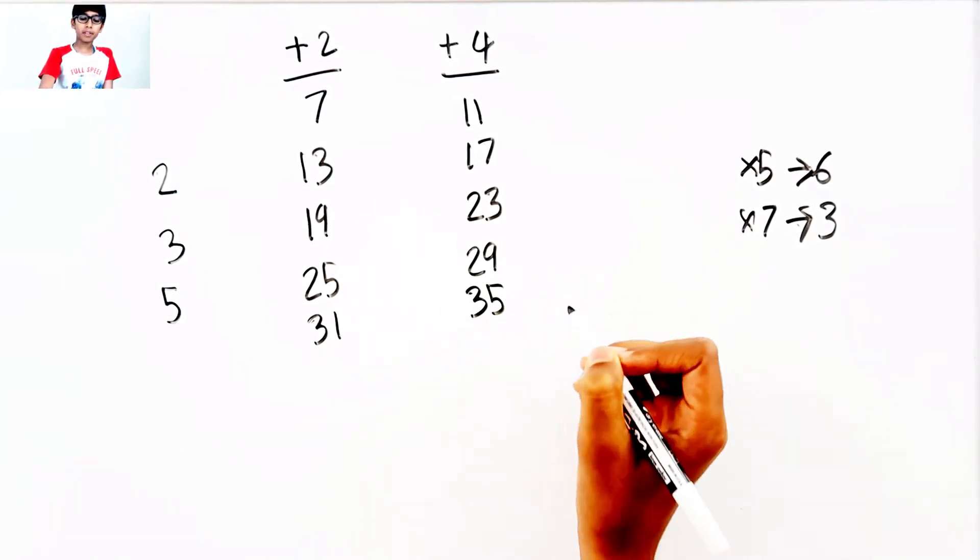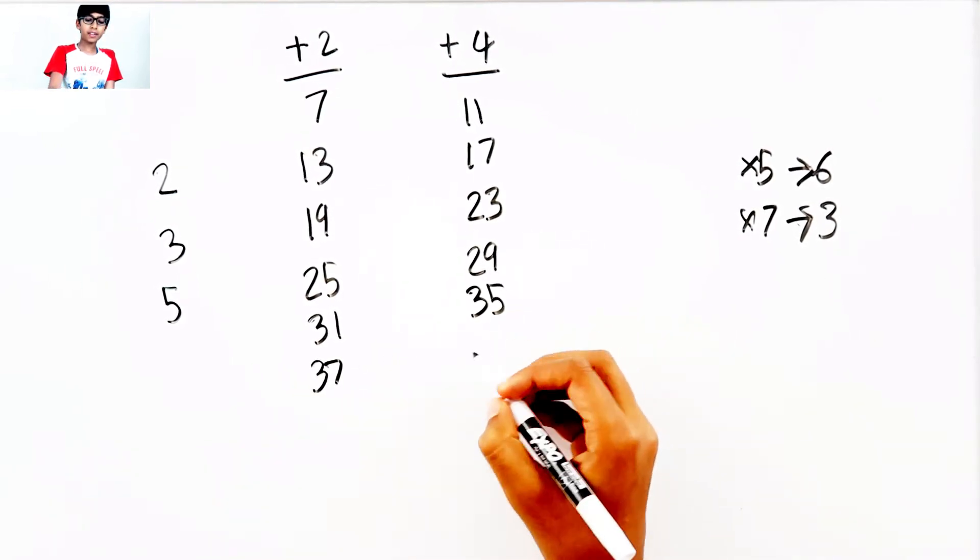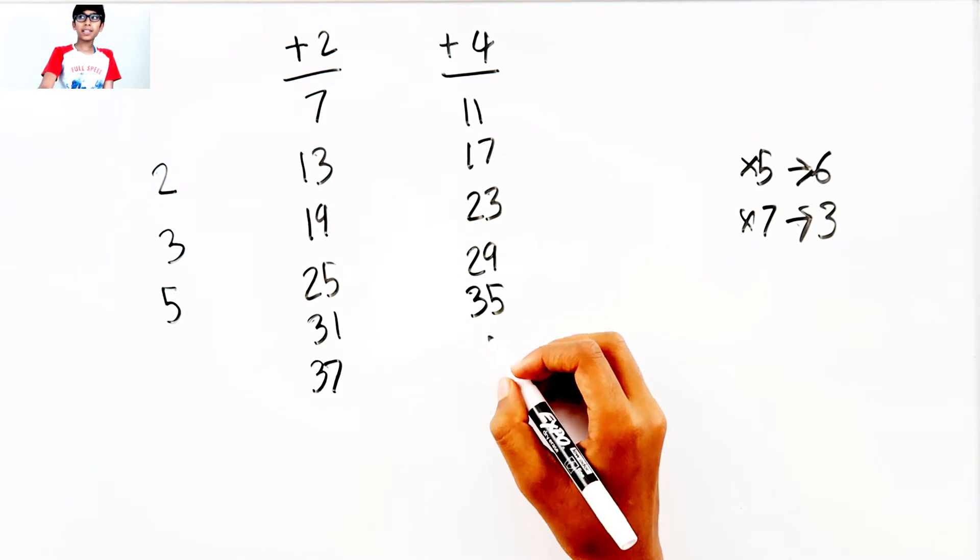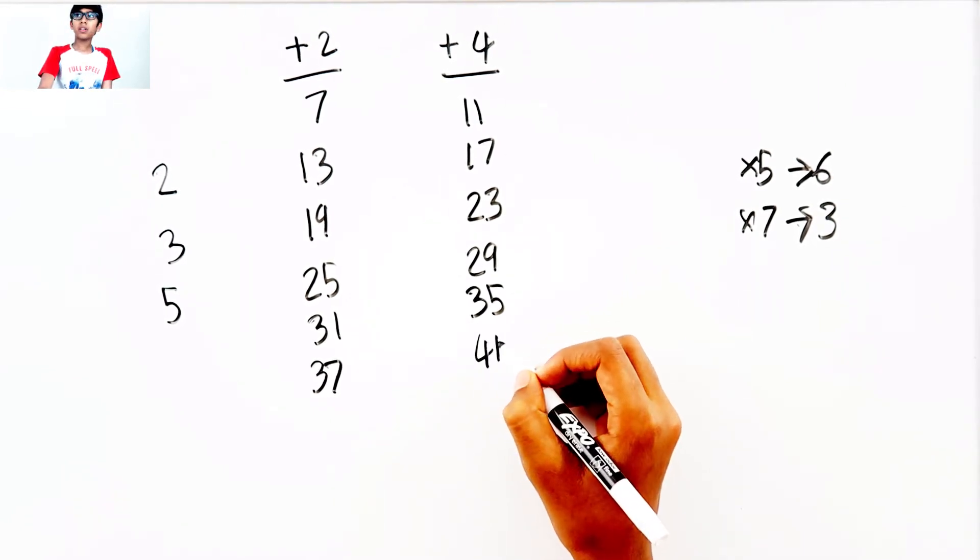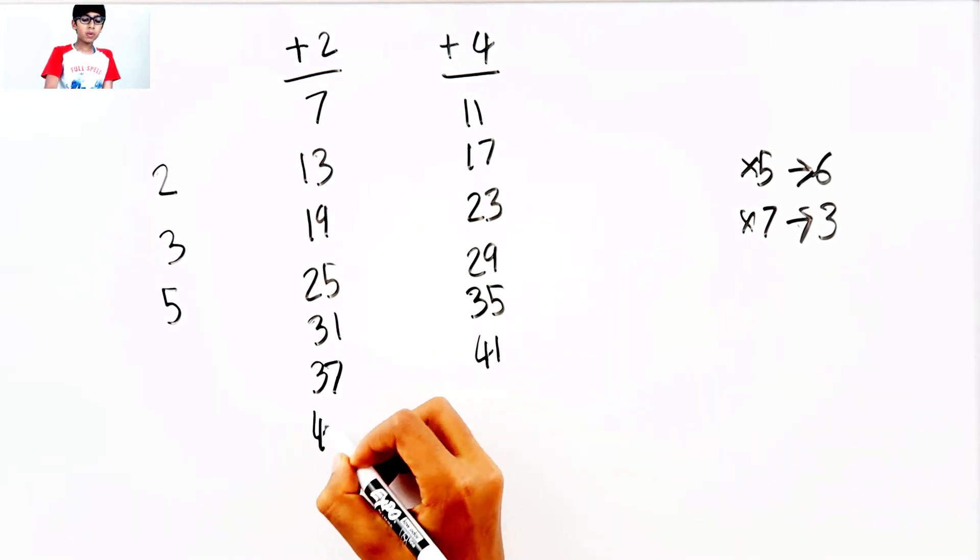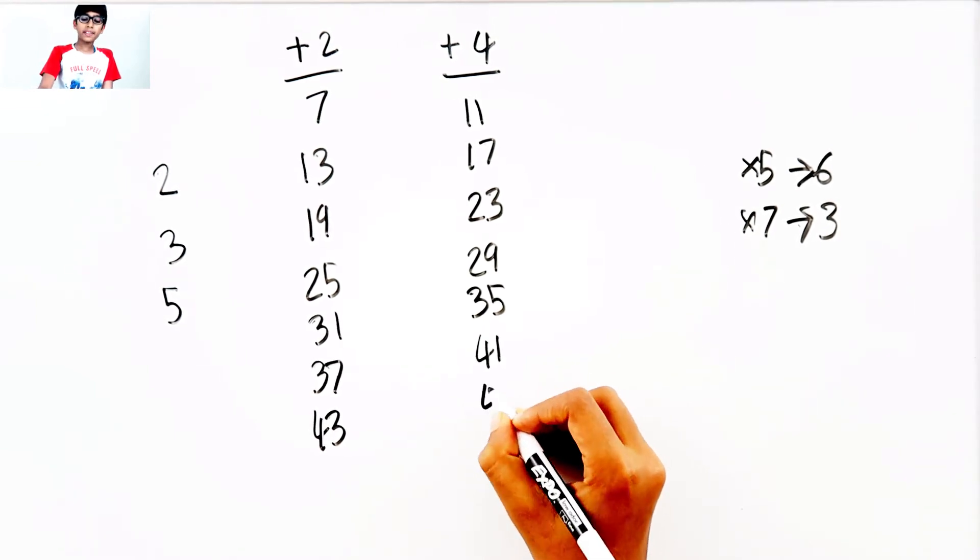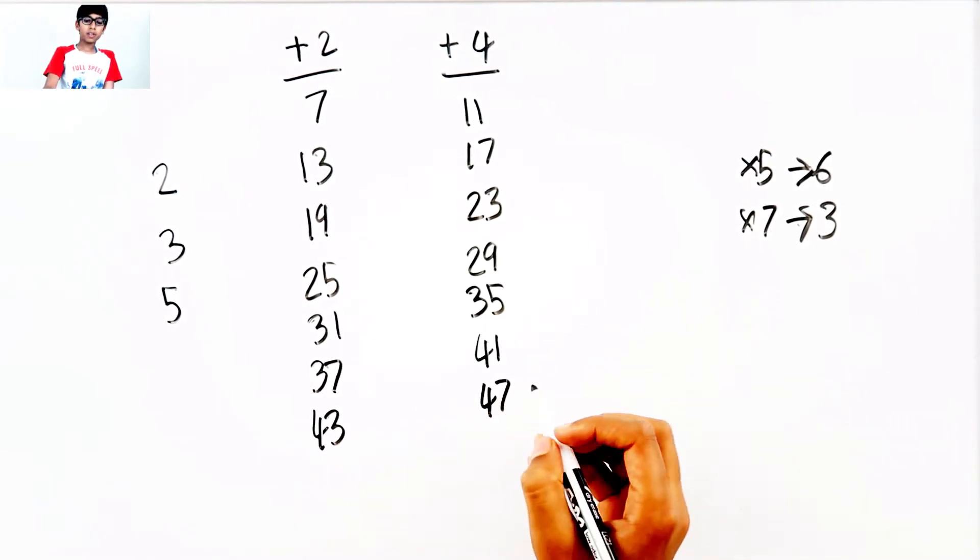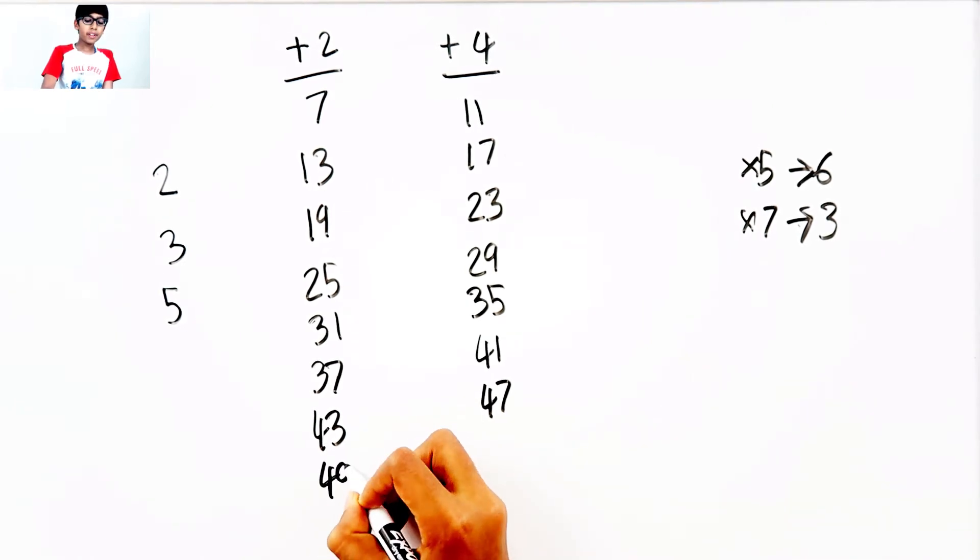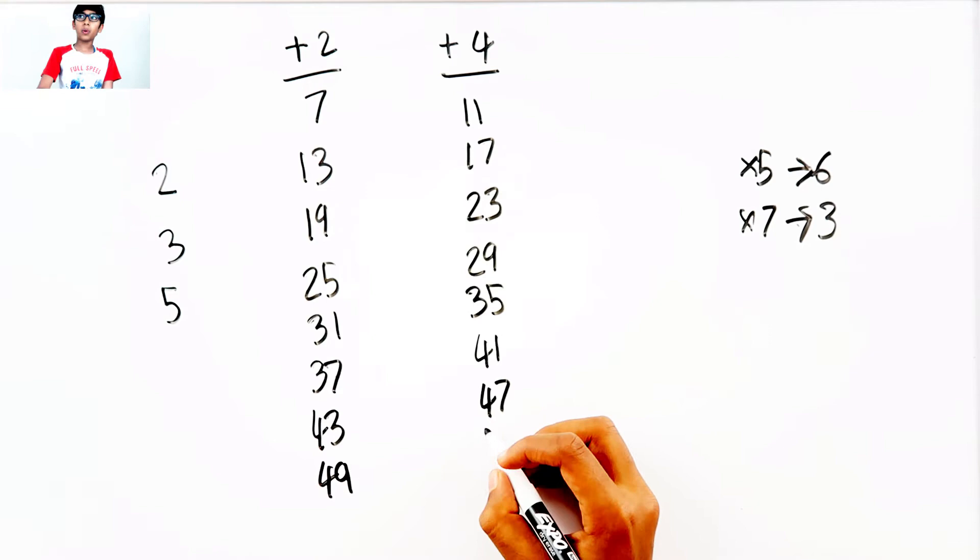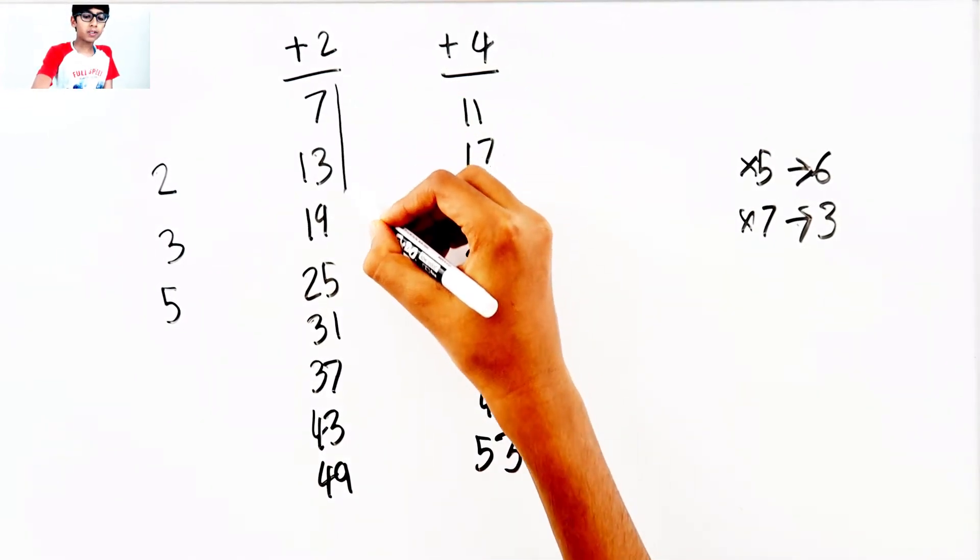Plus 2, 35, plus 2, 37, plus 4, 41, plus 2, 43, plus 2, 47, plus 2, 49, plus 4, 53. I don't have room so I'll just put line here and a line here.